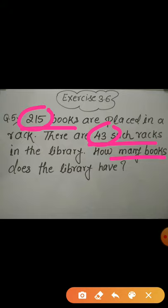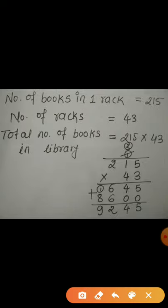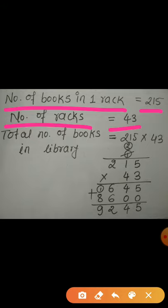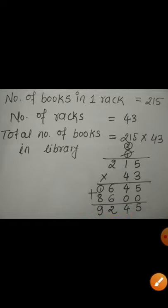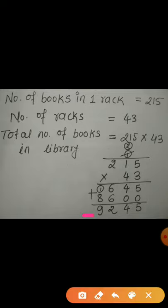Let us write what we are given: number of books in one rack is 215, number of racks in the library is 43. So, total number of books in the library = 215 multiplied by 43. Here you can see the multiplication of these two numbers. After multiplication, I got the product 9245. So, there are 9245 total number of books in the library.